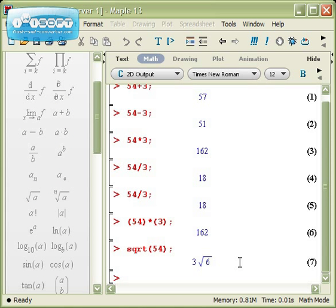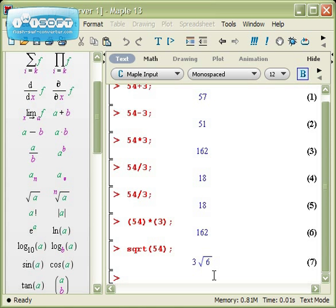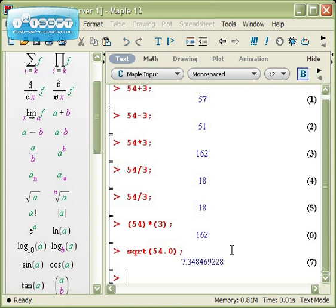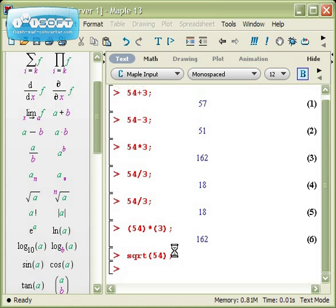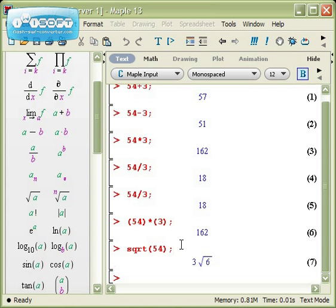One of the ways to get around this is to rerun this command, but instead of writing the square root of 54, write the square root of 54.0. If you put a decimal number in, then Maple will always give you a decimal number out. So 7.3484, roughly. Let me take that decimal point out and rerun the command. So the square root of 54 is 3 root 6.